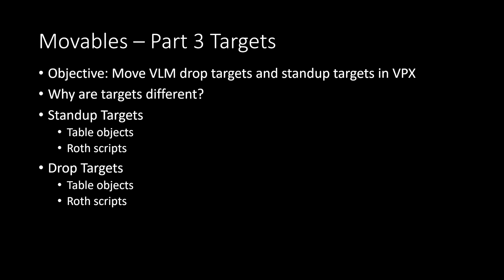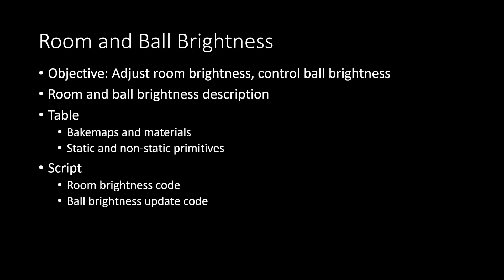We made it through all the movable stuff. All the main VLM topics have really been covered by now, and we'll get into more supporting topics. In the next video we'll talk about how to adjust the overall room brightness and how to dynamically adjust the ball brightness in various parts of the table as the room lighting changes. See you then.